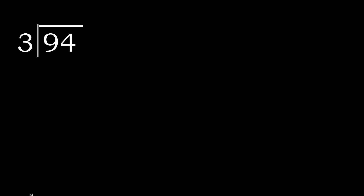94 divided by 3. First, take 9. 9 is not less than 3, so we work with 9. 3 multiplied by which number is nearest to 9 but not greater? 3 multiplied by 3 is 9.